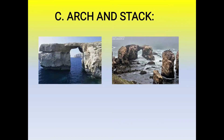When sea wave attack on the coast acts on two sides of a rock mass, differential erosion cuts the weaker portion at a right angle to the plane of the headland. A through-passage is made through the projection of land, and the relief form looks like an arc of rock. Such features are known as sea arcs.